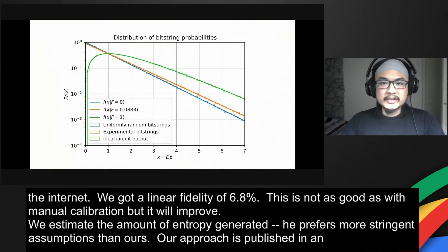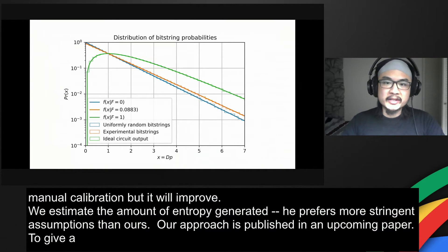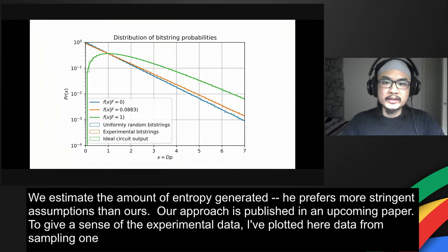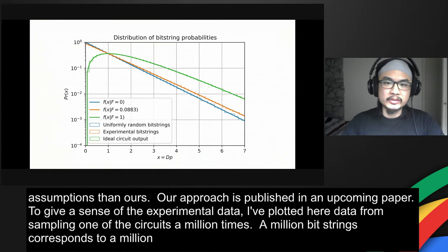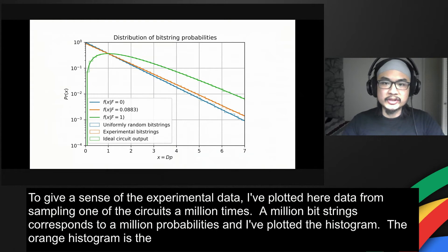To give a sense of the experimental data, I've plotted here data from sampling one of the circuits a million times. A million bit strings corresponds to a million ideal probabilities, and I've plotted the histogram of these probabilities scaled by the Hilbert space dimension. The orange histogram is the experimental data,